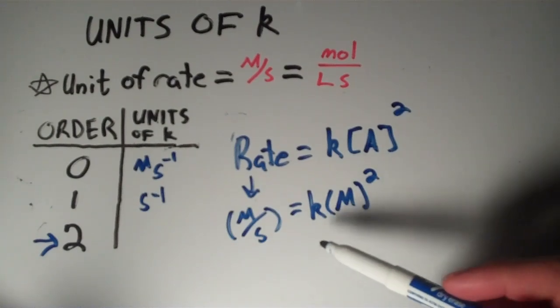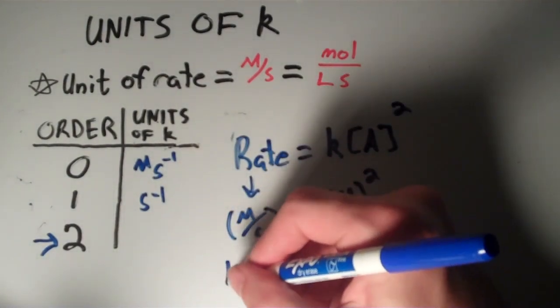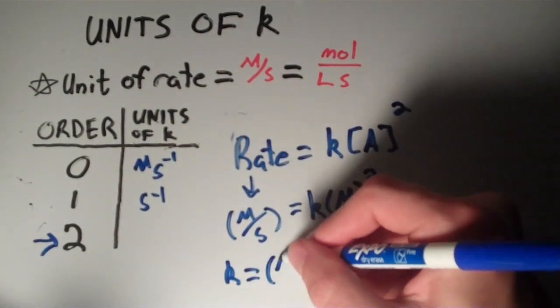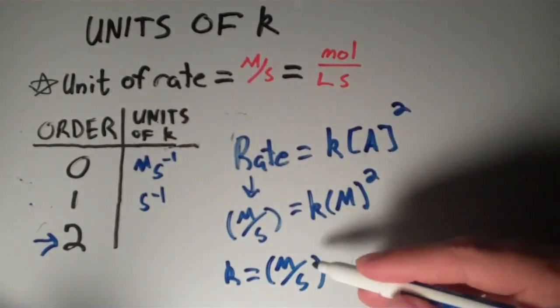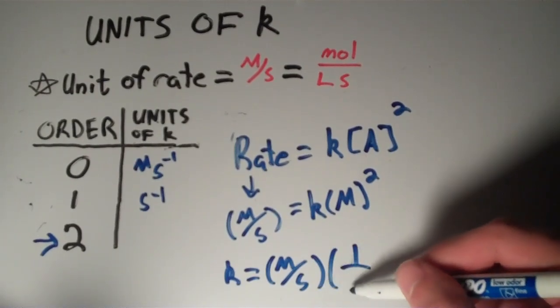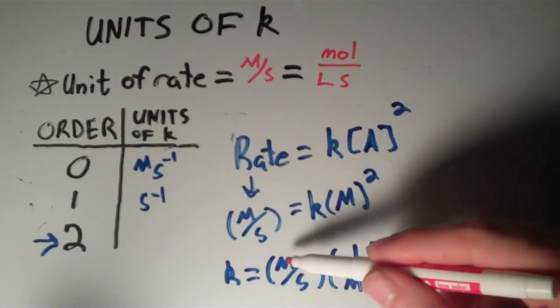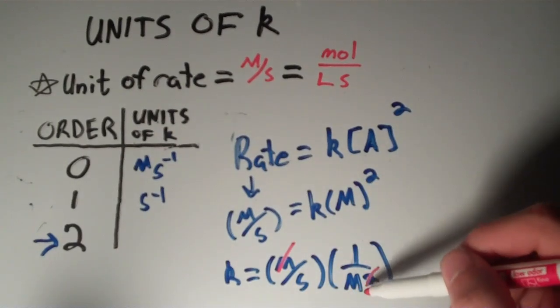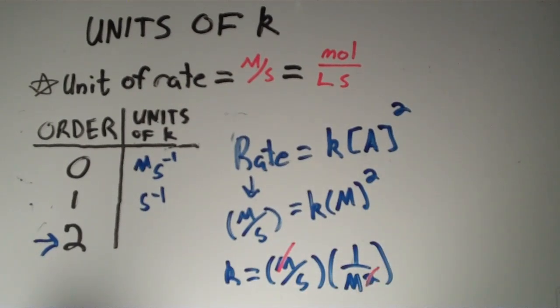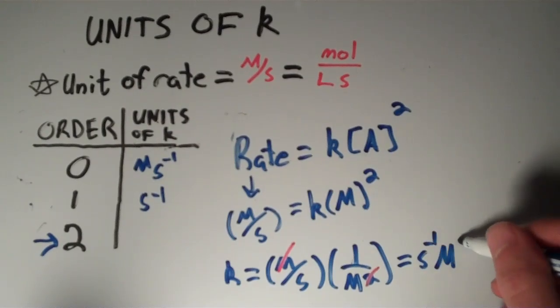If we rearrange this equation and divide both sides by molar squared, we get K by itself. K equals molar per second divided by molar squared, or times one over molar squared. Molar cancels out with molar, but we have an additional molar term on the bottom. We're left with seconds to the minus one and molar to the minus one, or M⁻¹·s⁻¹.